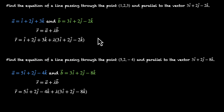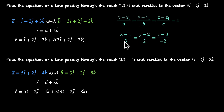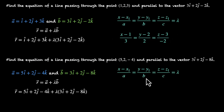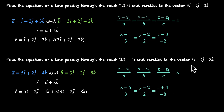For the first example, the point is (1, 2, 3), so the numerators are x minus 1, y minus 2, and z minus 3. The direction ratios of the parallel vector are 3, 2, and minus 2, so those go in the denominators. For the second example, the point is (5, 2, minus 4), giving x minus 5, y minus 2, z plus 4. Be careful of the negative sign. The direction ratios are 3, 2, and minus 8. The denominator gives the direction of the line and the numerator gives the point through which it passes.